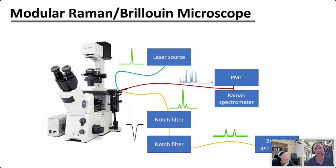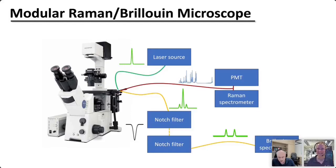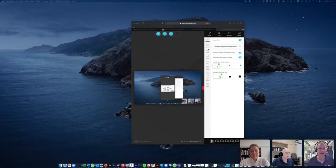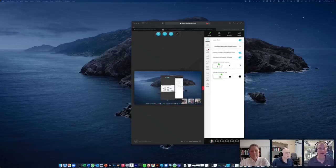A final question from Stan Botchway: how much laser power at the sample is needed for Brillouin spectroscopy? As much as you have — it is a very light-hungry technique. We use a laser of about 400 milliwatts and have about 300 milliwatts at the sample. Normally we don't use that much — maybe 100 milliwatts — and our normal pixel dwell time, the best we can do, is about 50 milliseconds. So Brillouin is faster than Raman, but not significantly faster.